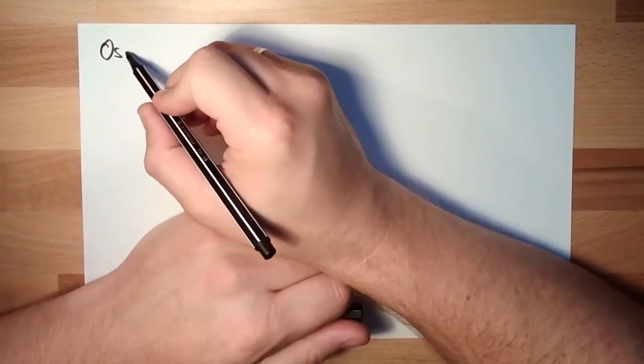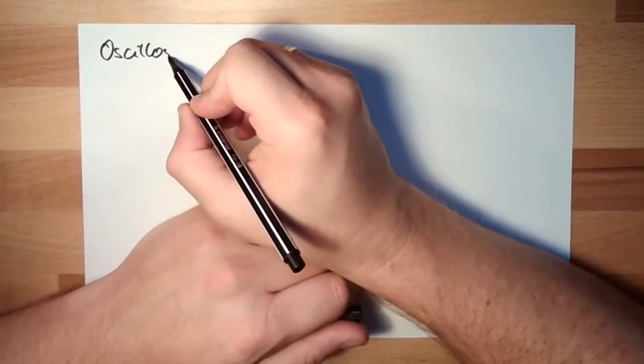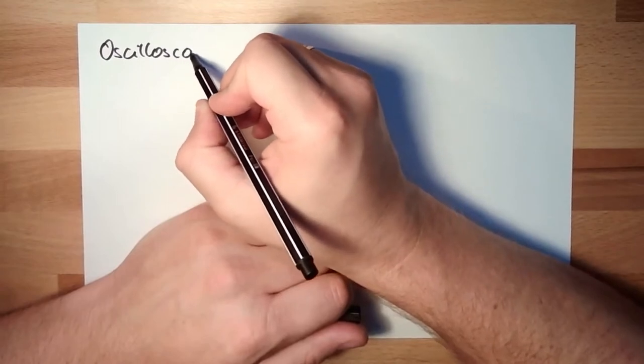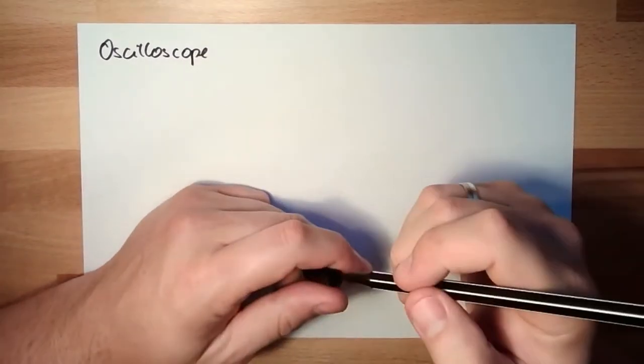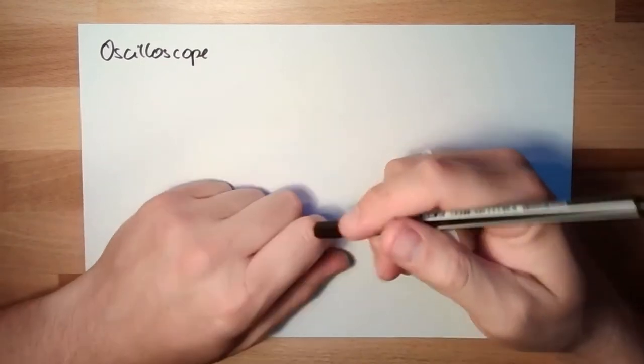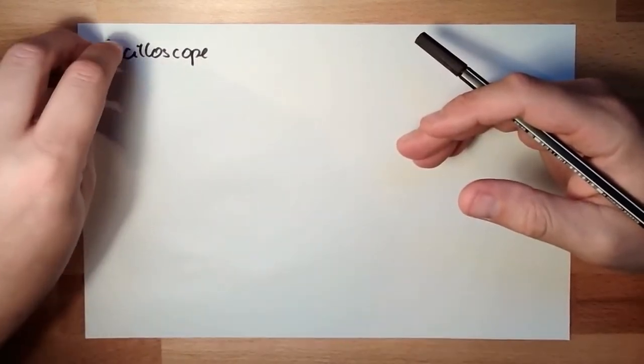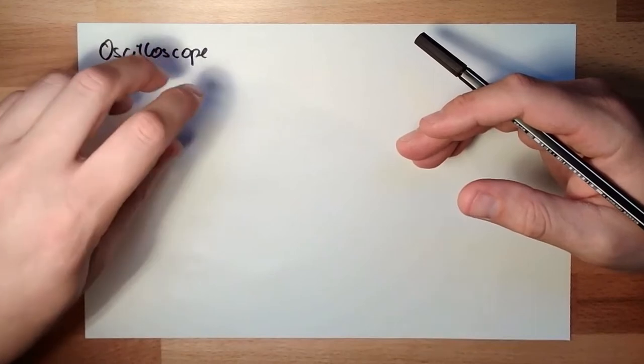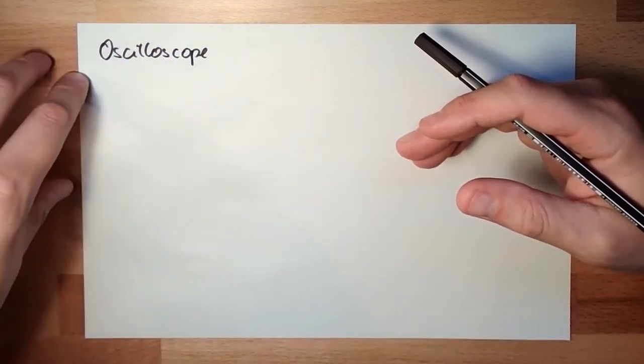So I will write Oscilloscope. Scope means view, the scope, and we even see the oscillations, this is why the name is Oscilloscope.